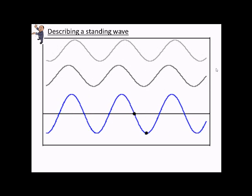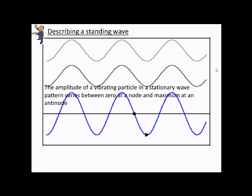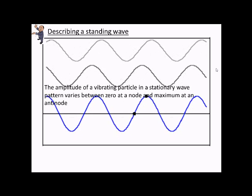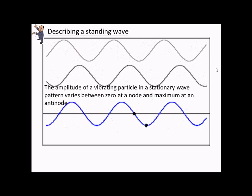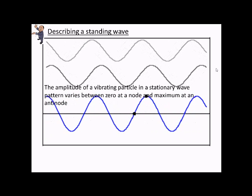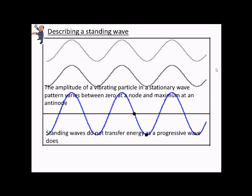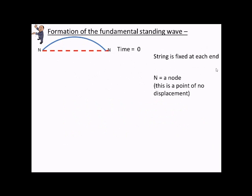Now, describing a standing wave. The amplitude of the vibrating particle in a stationary wave varies between the node, zero, and a maximum at the anti-node. If we think about a string that's fixed at both ends, it could be a guitar string. If you pluck it, it starts to vibrate. In here, there are our nodes, and we can see that at a quarter of the time period, we've had a quarter of an oscillation.